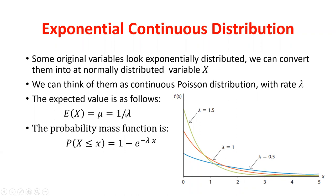We don't see lambda directly in the data, but we can find the average of the variable X. For an exponentially distributed variable, lambda equals 1 over the mean. Once I have lambda, the cumulative distribution function gives P(X ≤ x) = 1 − e^(−λx). This always gives the probability of seeing that X value or anything to the left, acting just like the standard normal table but with a simpler function.